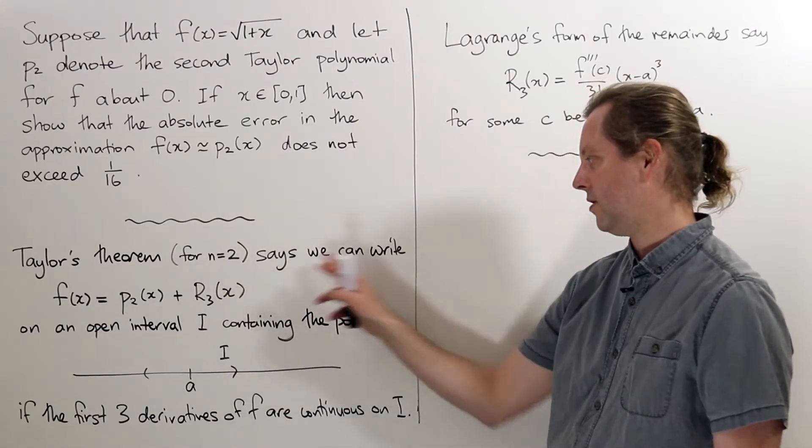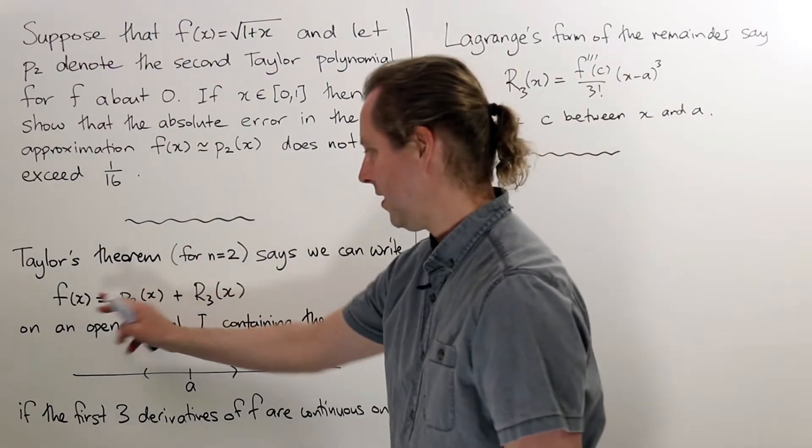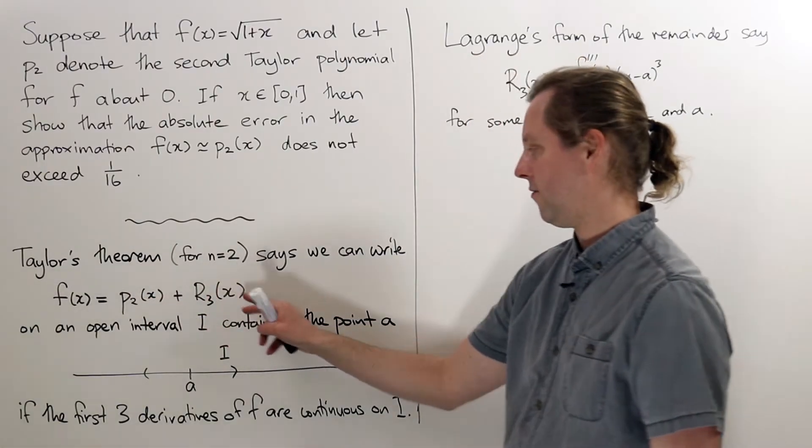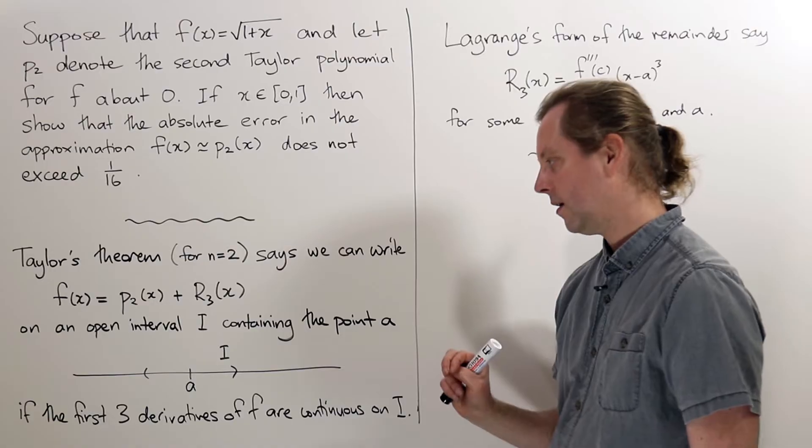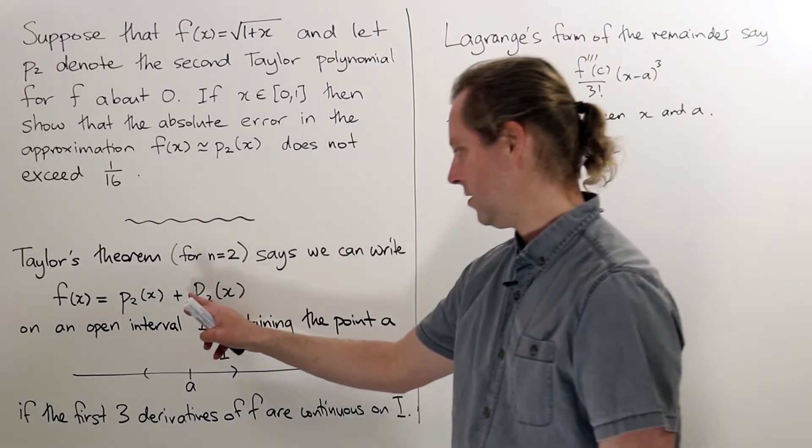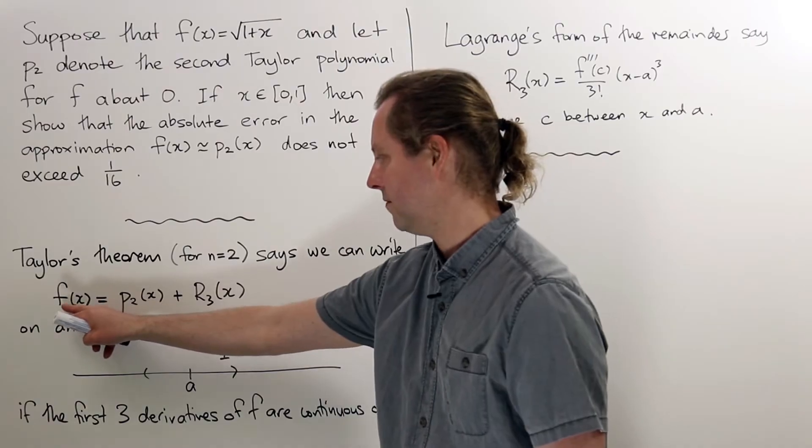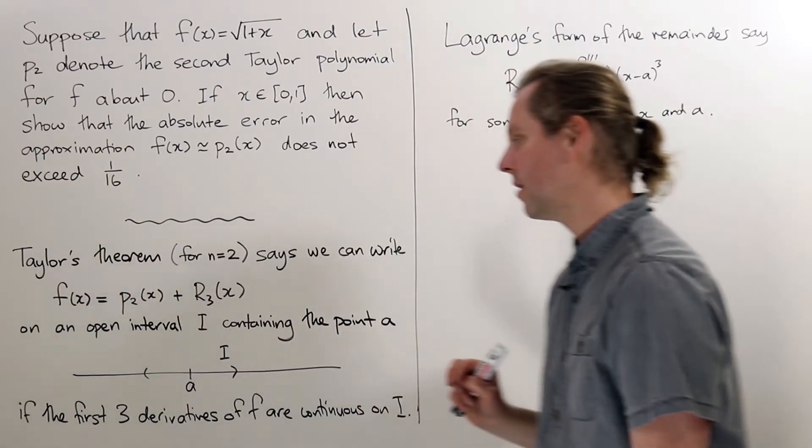So Taylor's theorem for n equals 2 says we can write f(x) as the sum of p2(x) plus r3(x), and the r3(x) is a remainder term. Essentially it's just anything, any stuff that's left over from the difference between f(x) and p2(x).